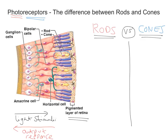The rods are clearly rod-shaped — we'll start with the basics. And the cones are clearly cone-shaped, hence their name. But if you were asked in an exam question to list differences between the two, that would actually get you a mark. So it's always worth putting in those kind of basics.